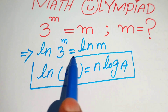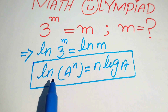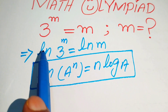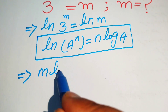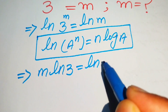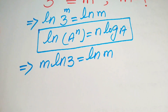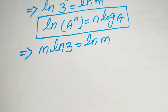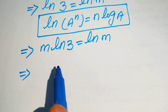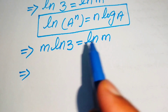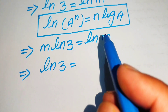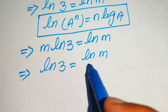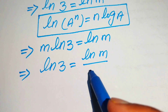Using this property of log, we move this exponent in front of the log, and it will be written as m times log 3 equals log of m. Now we combine variable terms on one side and constant terms on the other, moving m to the right-hand side, giving us log 3 equals log of m divided by m.